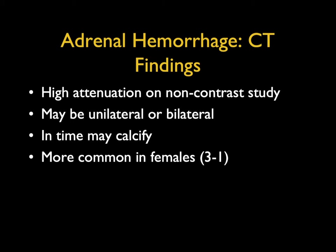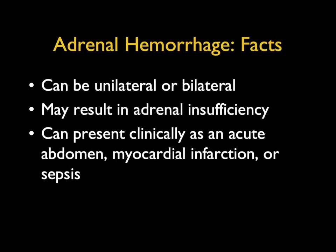Adrenal hemorrhage is a very interesting entity. It shows high attenuation on non-contrast studies and can be unilateral or bilateral. Over time, the gland can atrophy and calcify, although many cases remain large with rim calcifications. It's more common in females than men, and when bilateral, it can result in adrenal insufficiency and Addisonian crisis.